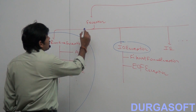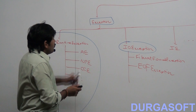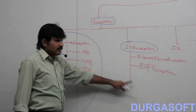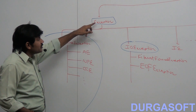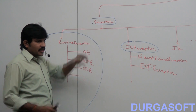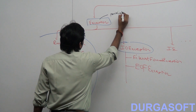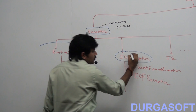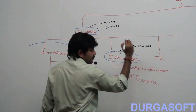Now consider the Exception class. For Exception, some child classes are checked, but some child classes are unchecked. So such a type of checked exception is said to be a partially checked exception. So, is Exception partially checked or fully checked? Partially checked. And is IOException partially checked or fully checked? Fully checked exception.